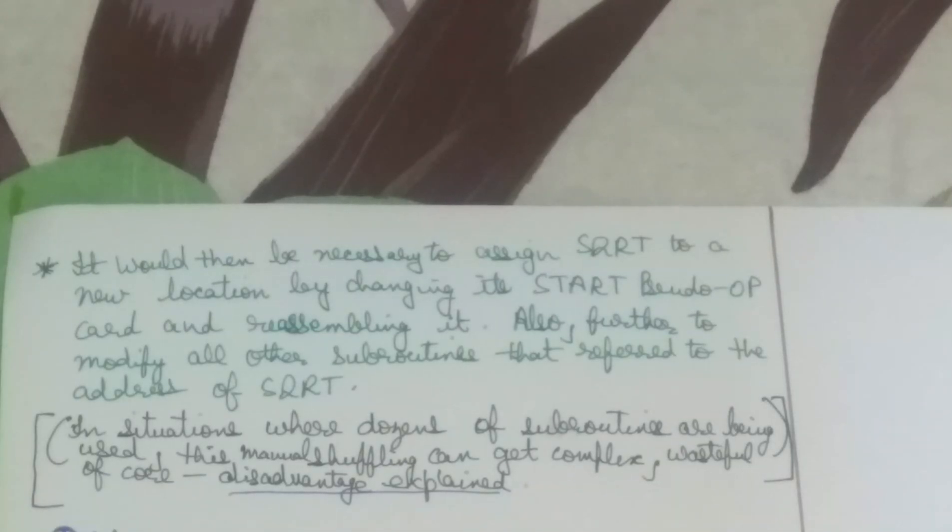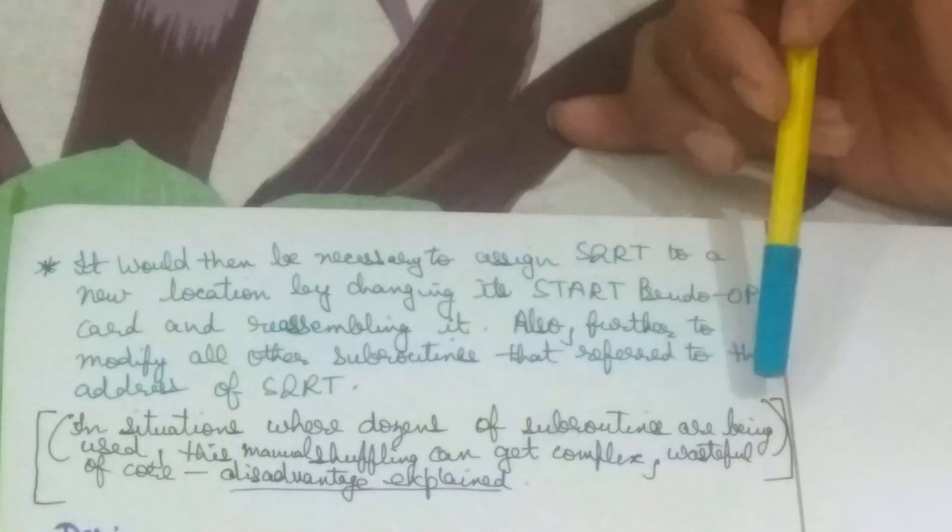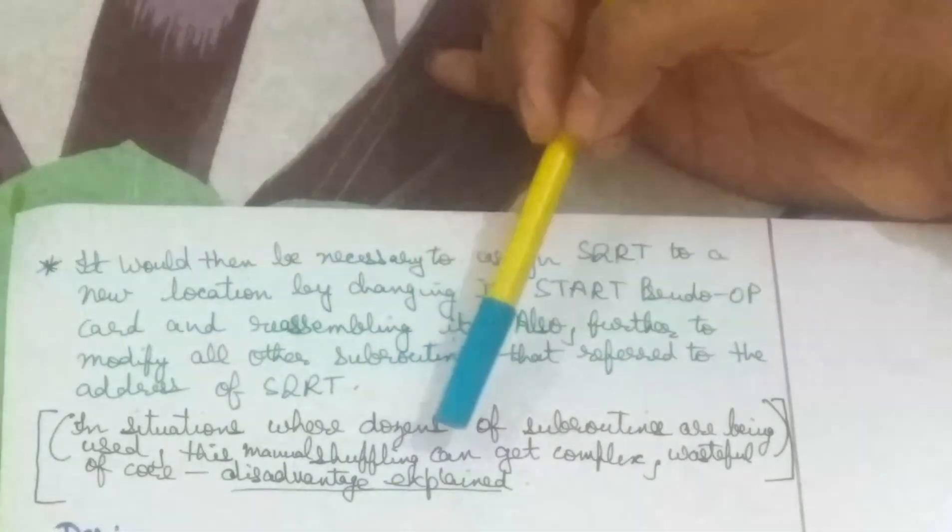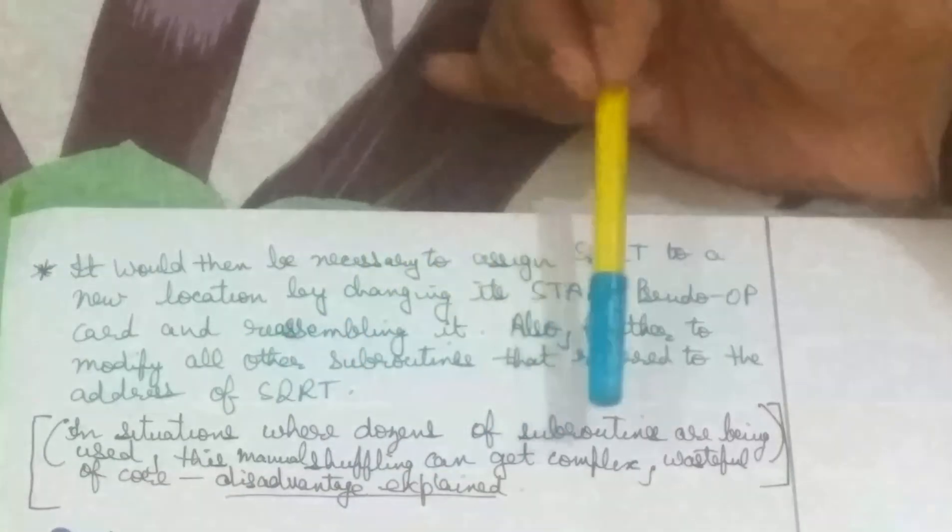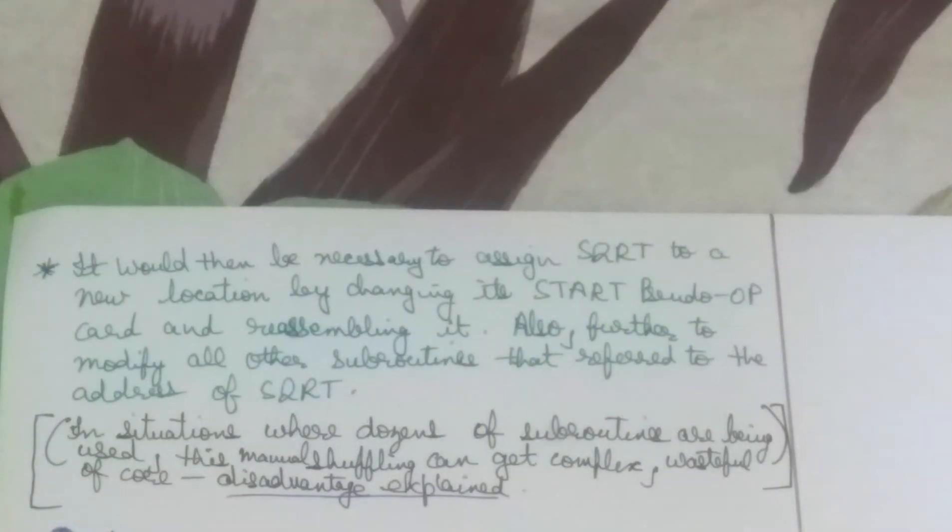In situations where dozens of subroutines are used, this manual shuffling can get complex, wasteful of core - a disadvantage which has been already explained. Where there is so much trouble, there is a big problem. So this is all about the absolute loaders.